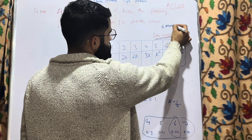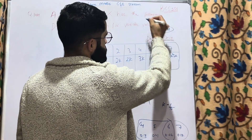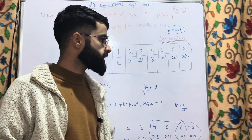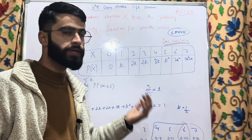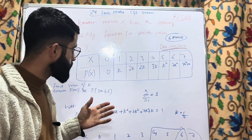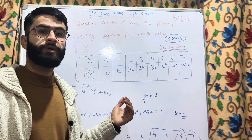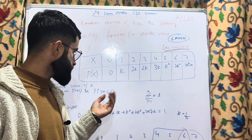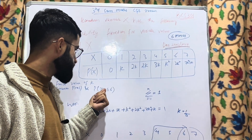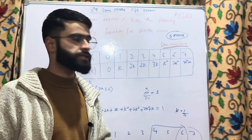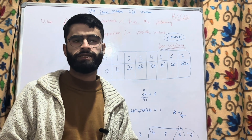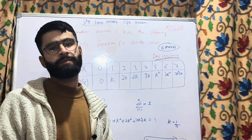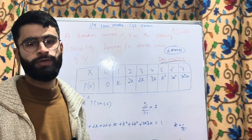This was a 6-mark question from the December 2023/24 paper — so these 6 marks are just in your pocket! It is a simple question. I hope you have understood the procedure: how to find the value of k first, and then how to evaluate probabilities based on the given conditions. Make sure you share this with your friends and batchmates who are struggling with the mathematics subject. Thank you!